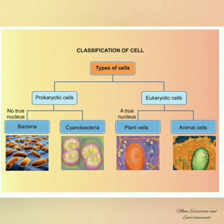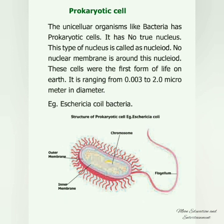Classification of Cells: Cells are classified into two types — prokaryotic cells and eukaryotic cells. Prokaryotic cells have no true nucleus. Unicellular organisms like bacteria have prokaryotic cells, also called nucleoid, which range from 0.003 to 2.0 micrometers in diameter.